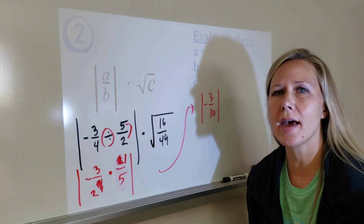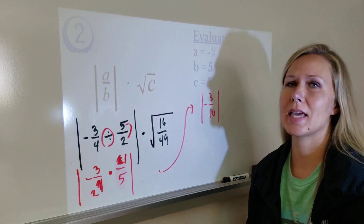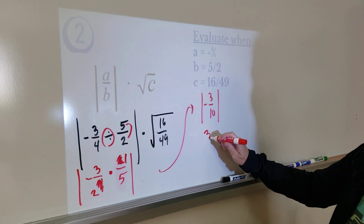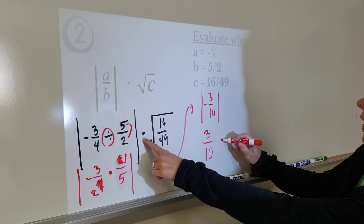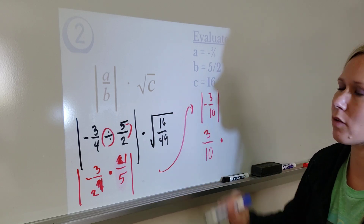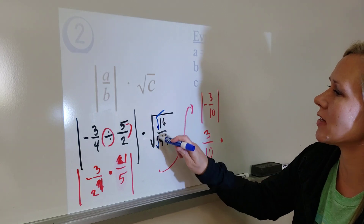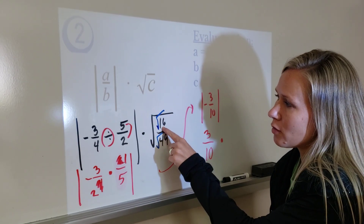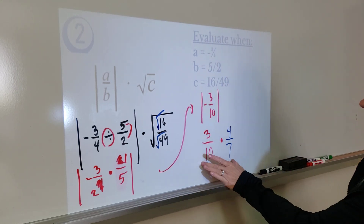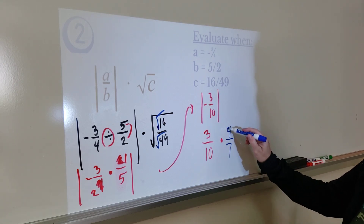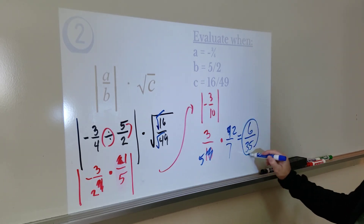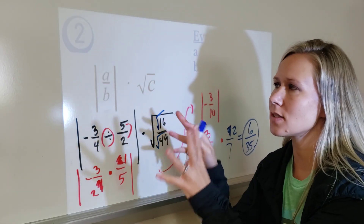However, it's an absolute value bar. So what it's asking is, what's the distance negative three-tenths is from zero on the number line? Distance is always positive, so it would be positive three-tenths. Now we're asked to multiply it by the square root of sixteen forty-ninths. If this wants the square root of the entire fraction, I can take the square root of the numerator and denominator separately: the numerator will be four and the denominator will be seven, so this will be four-sevenths. Simplify before you multiply — these two are divisible by two — and I end up with six thirty-fifths.